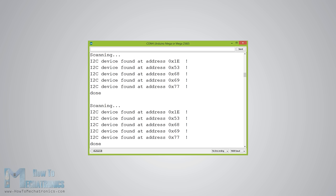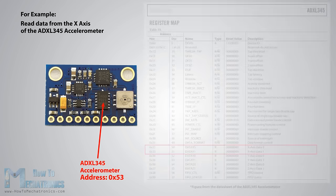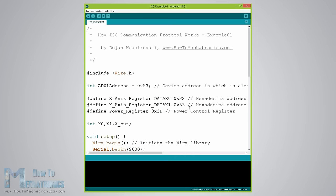After finding the addresses of the devices, we also need to find the addresses of their internal registers in order to read data from them. For example, if we want to read the data for the X axis from the three-axis accelerometer sensor of the GY80 breakout board, we need to find the internal register address where that data is stored. From the datasheet of the sensor we can see that the data for the X axis is actually stored in two registers: DATA_X0 with hexadecimal address 32 and DATA_X1 with hexadecimal address 33.